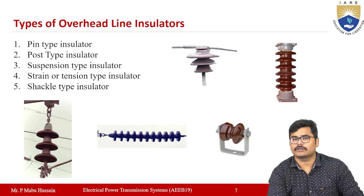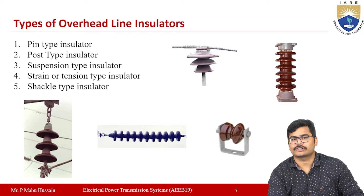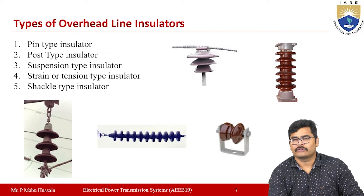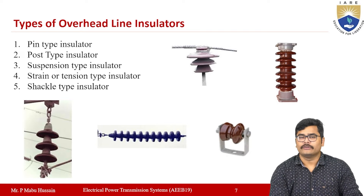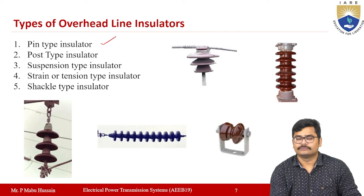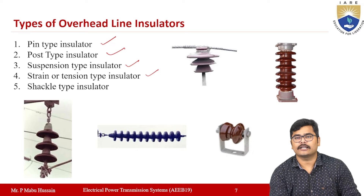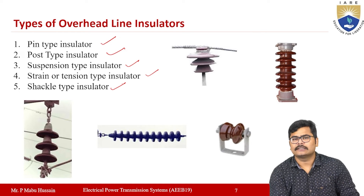Now, coming to the types of overhead line insulators. There are many types, but the most widely used are: pin type insulator, post type insulator, suspension type insulator, strain or tension type insulator, and shackle type insulator. These five are the insulators most widely used in transmission line systems.